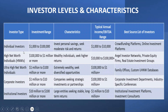An individual investor is usually someone that has a thousand dollars to a hundred thousand dollars. Their characteristics are they invest their personal savings, seek moderate risks and returns, and the typical annual income or EBITDA range might be anywhere from a thousand to ten thousand dollars a year. The best sources for these investors include crowdfunding platforms or online investment platforms — if you're looking to attract individual investors, those are great spots to find them.